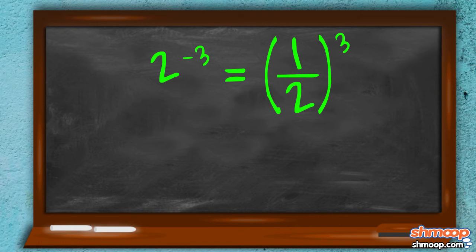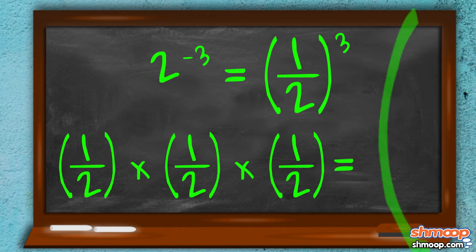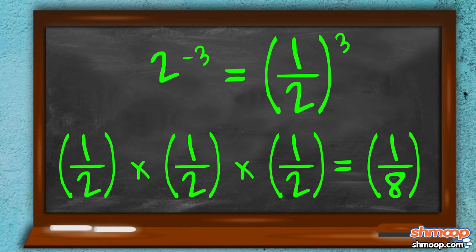So for example, if you have 2 to the negative 3rd power, it's the same as the reciprocal of 2: 1 half to the 3rd power. Half times half times half is 1 eighth.